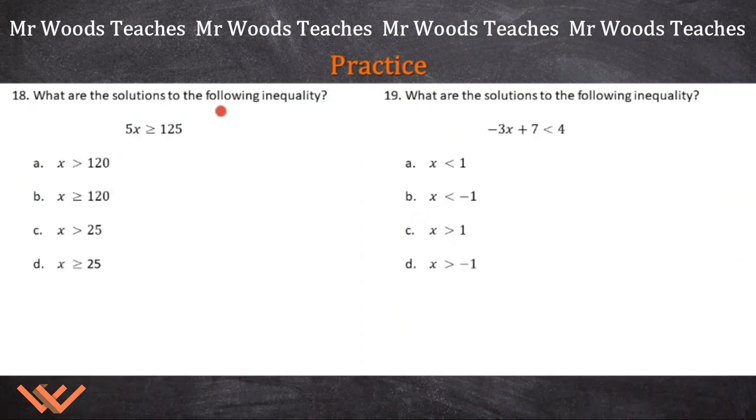Number 18. What are the solutions to the following inequality? Well, first off, you have to understand what a solution is and what an inequality is. So this is an inequality right here. So 5x is greater than or equal to 125. It says these are the solutions. So we're looking for the solution. That's when they talk about that. They're looking for what is, see right here? There's that x. It's trying to find out what is x. What are the solutions to x?